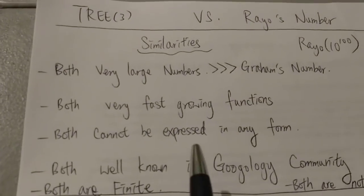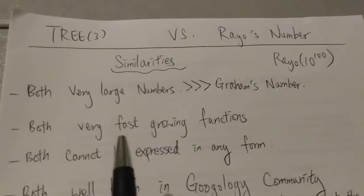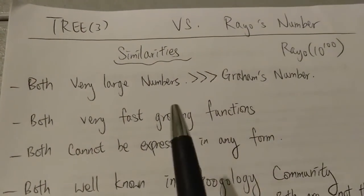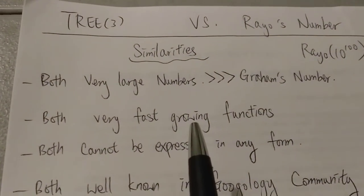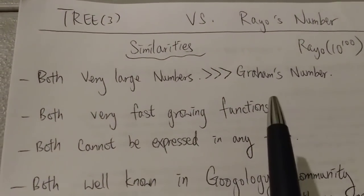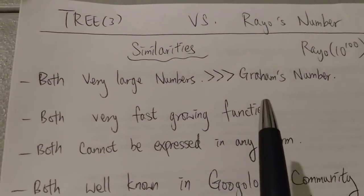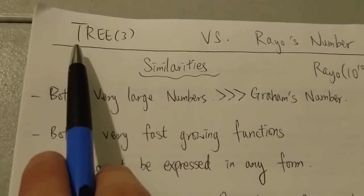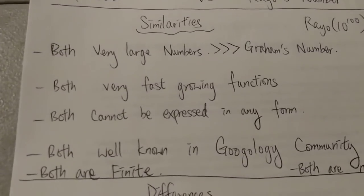Yeah, so you cannot express these two numbers other than this and that. You cannot express it using any notation, regular notation, such as power tower or even the up arrow notation. Not even the chain arrow notation can express these two numbers. That's how big they are.